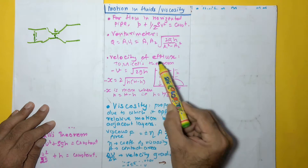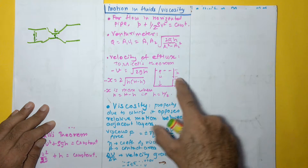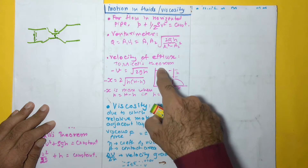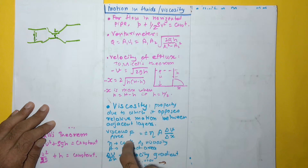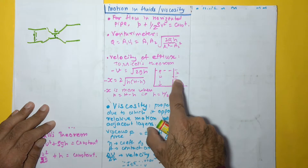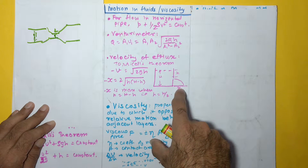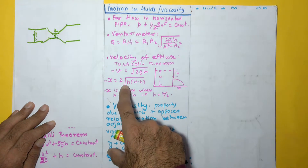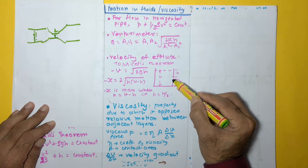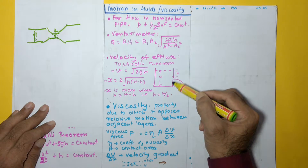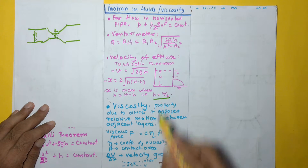Then we look at velocity of efflux and Torricelli's theorem. If a container has an opening at depth h from the surface, with the total liquid height being H, the velocity with which water comes out is √(2gh). The horizontal range at which the water falls is 2√(h(H−h)), and this range is maximum when the opening is exactly at the middle of the total liquid height, i.e., when h = H/2.